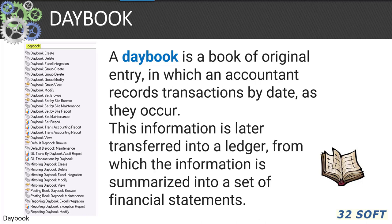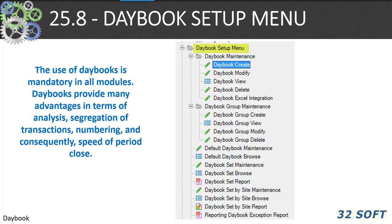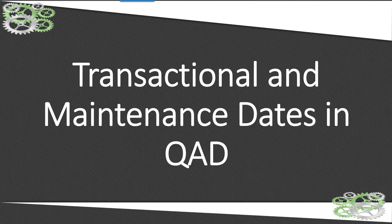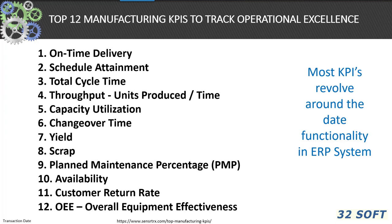A day book is a book of original entry in which an accountant records transactions as of the date they occur. This information is later transferred to a ledger, from which it is summarized into financial statements. The use of day books is mandatory for all modules and provides many advantages in terms of analysis, segregation of transactions, numbering, and speed of period close. If you look at most popular KPIs for operations, they mostly revolve around date functionality in your ERP system.